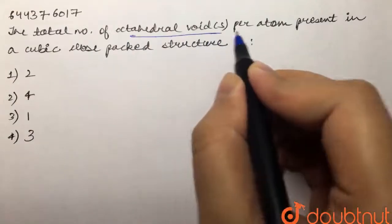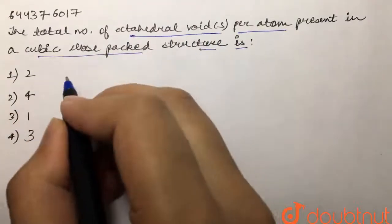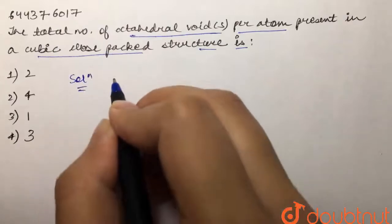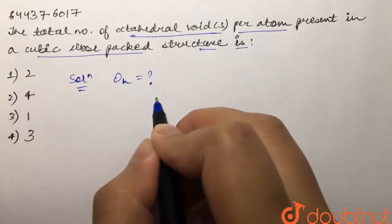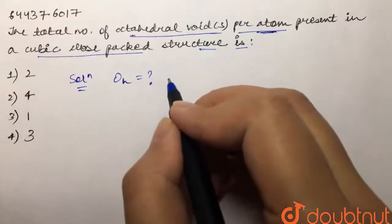Over here we are supposed to tell the total number of octahedral voids that are present per atom in a CCP structure. So we have to find out octahedral voids per atom in CCP structure.